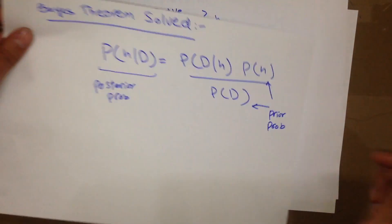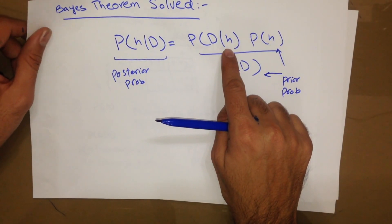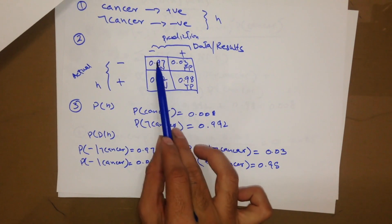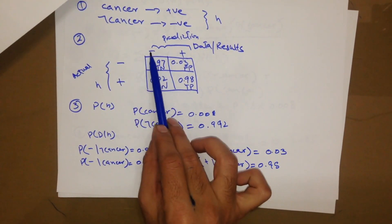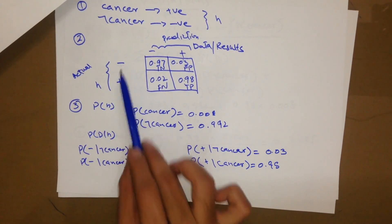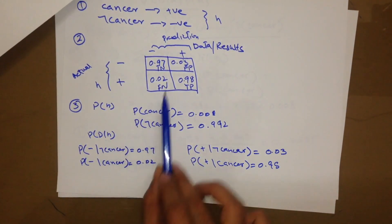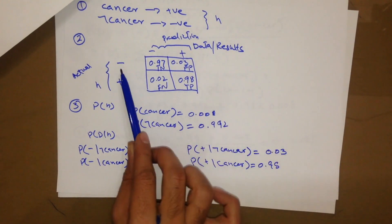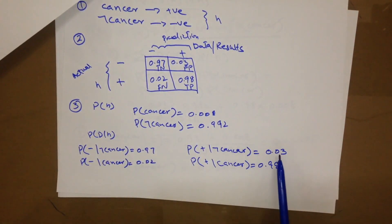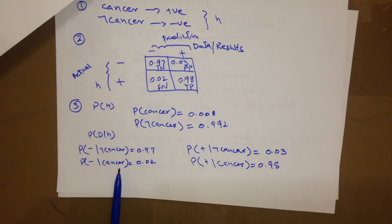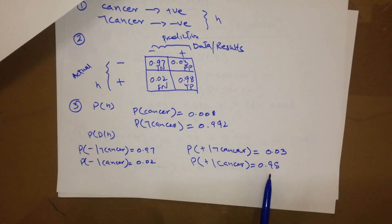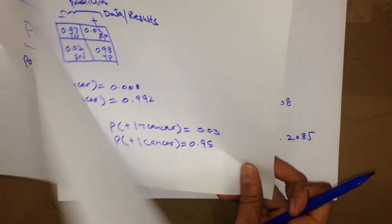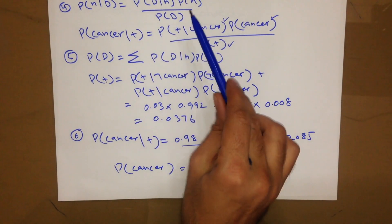After this we need to find out the probability of data given hypothesis, P(D|H). We have four values of P(D|H): when data is negative and hypothesis is not cancer the value is 0.97; when data is positive and hypothesis is not cancer; when data is negative and hypothesis is cancer; and when data is positive and hypothesis is also cancer, which is 0.98. We have now calculated the values for P(D|H).